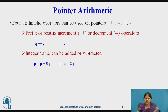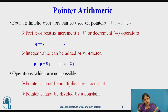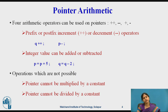Now let us see what cannot be done with pointers. A pointer variable cannot be multiplied by a constant. Similarly, pointer variables cannot be divided by a constant. If you try to do that, it will give you an error.